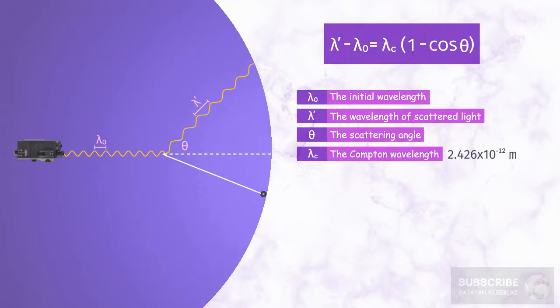The value of lambda prime minus lambda 0 is often referred to as delta lambda, or Compton shift. From here, lambda prime is always greater than lambda 0.